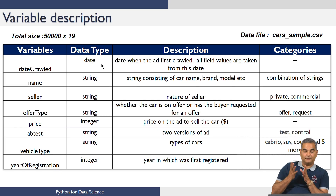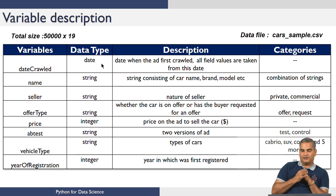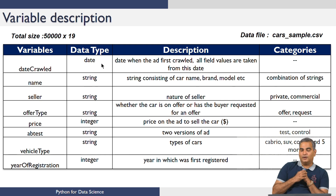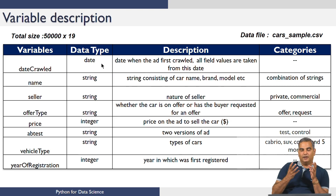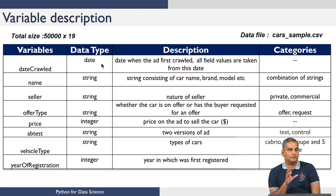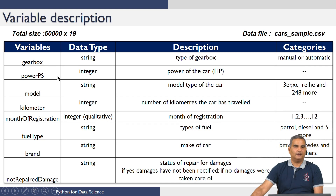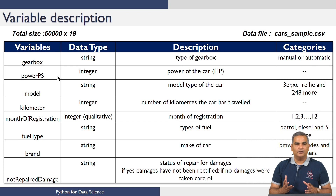Many of these variables will clearly have an impact on the price. Vehicle type is an important aspect. Seller type — private or commercial — could have an impact or might not. Private sellers might want to hold on and get the best price, while commercial sellers might want to move cars out quickly. So we really do not know how much impact it will have, but these are all relevant variables. In data science problems, you look at whether variables are relevant, and the data will tell you quantitatively how much impact they have — that is understood post solution.